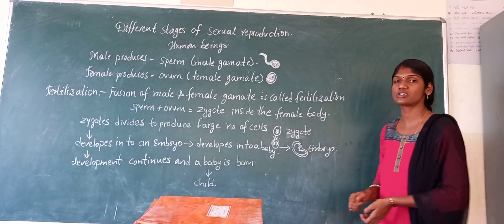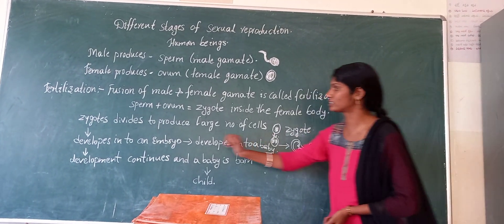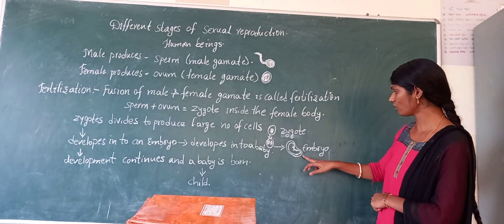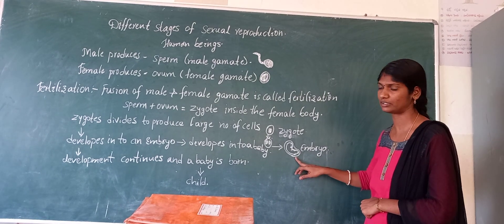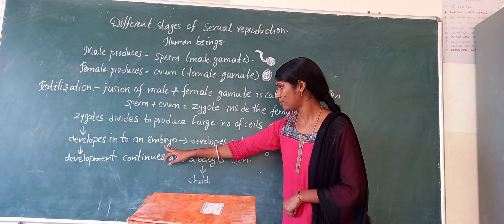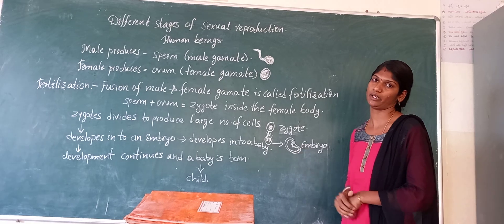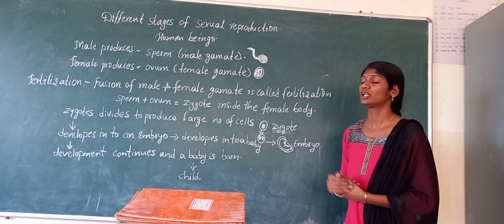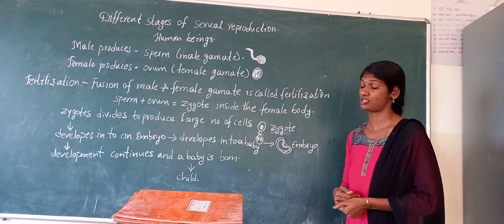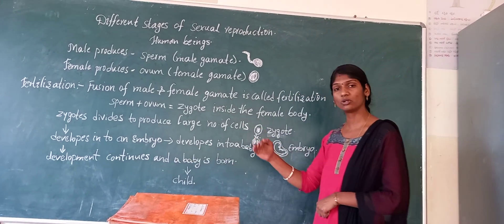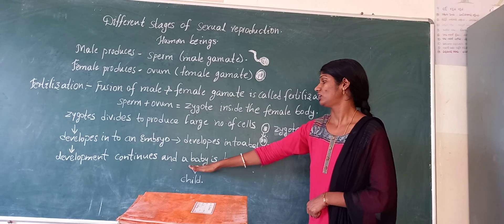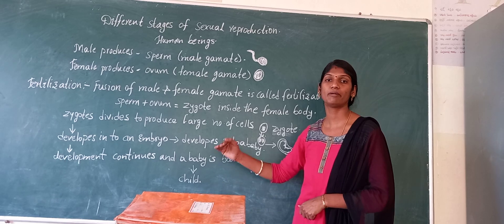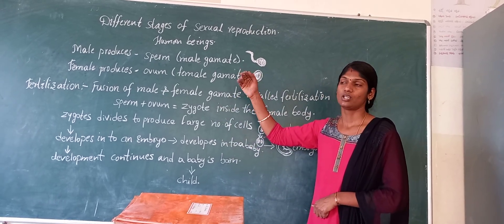After completion of producing a large number of cells, what you get at last is an embryo. See the structure of the embryo. This embryo is again developed into a baby. After that, the development is going to be continuous — this process continues to form a baby. The baby grows into a child, then a young one.